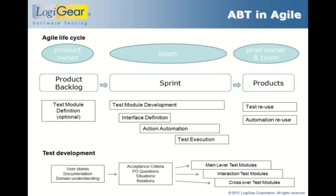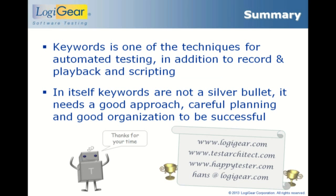One slide on agile: in a scrum project, you keep track of your overall test design, and for each sprint you start test development right away. You keep tests at roughly the same level of detail as your user stories, domain understanding, and acceptance criteria — not too low level. Later in the sprint, you might create interaction test modules. Then there is automation and execution. If successful, you should be able to get everything tested and automated before the end of the sprint. In the next sprint, you can start using those tests as regression tests and reuse the automation.